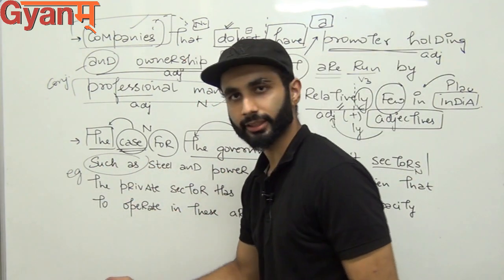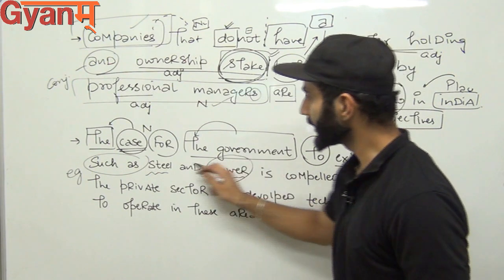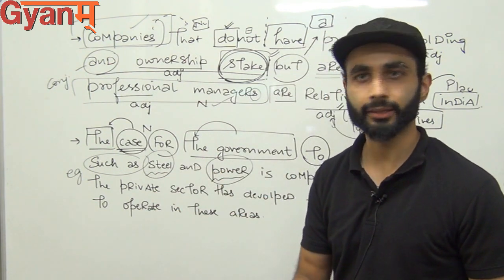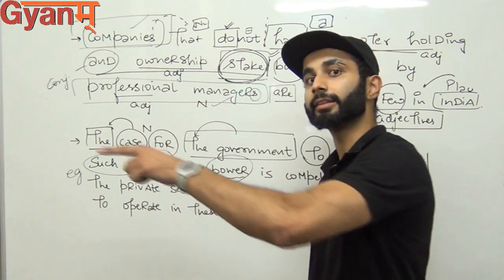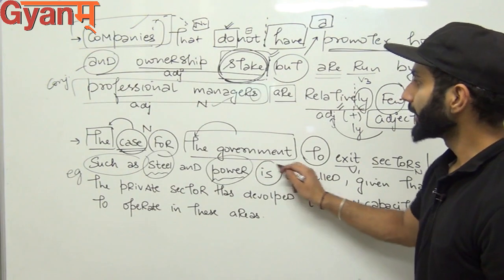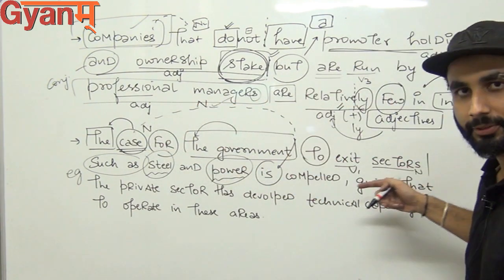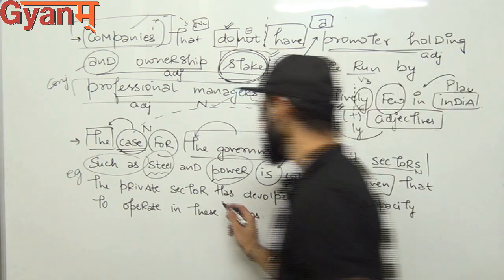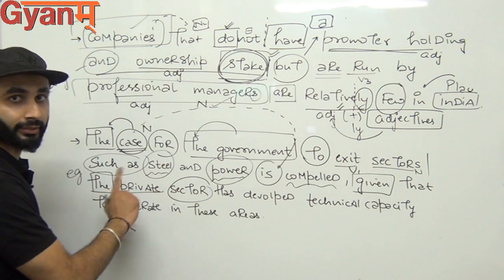'Such as' is a conjunction — it joins examples to the sentence. 'Steel' and 'power' — these are uncountable, so no 'an'; 'the' would make them specific: 'the steel sector' would only make sense if a specific sector in a specific place is mentioned. Right now nothing specific is stated, so no article there. 'Is compelled' — this has happened. 'The private sector' — 'sector' is a noun, 'private' is an adjective; 'the' is used because only the private sector is being specifically discussed.